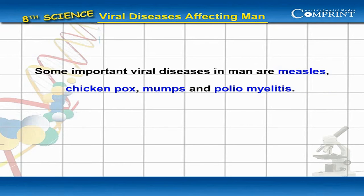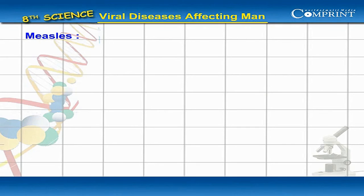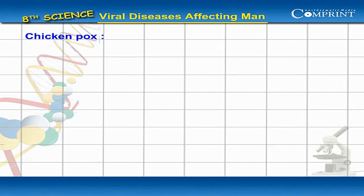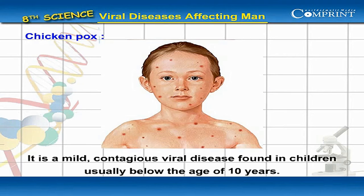Some important viral diseases in man are Measles, Chicken Pox, Mumps, and Poliomyelitis. Measles: This disease is also known as rubeola. This viral disease affects the eyes, nose, throat, and lungs of children.